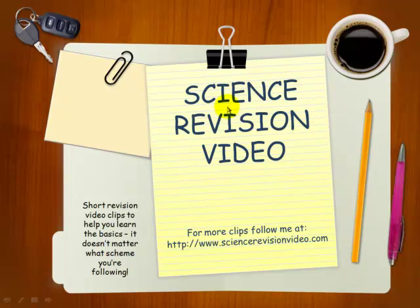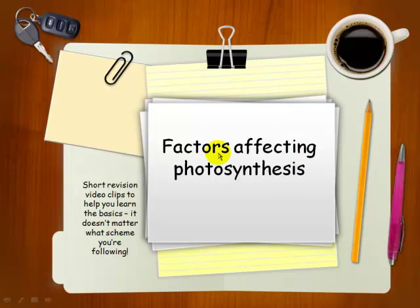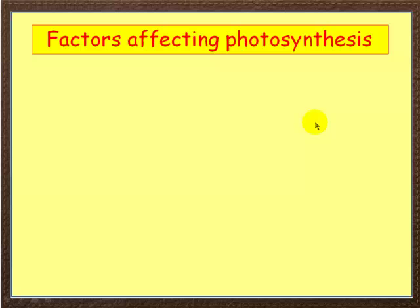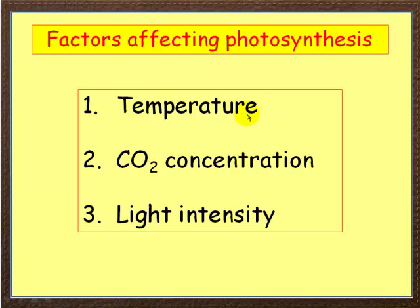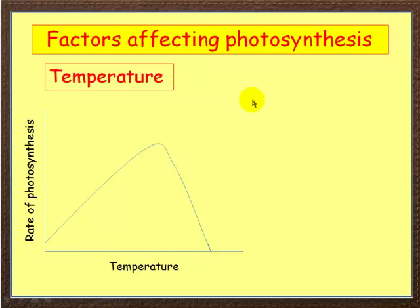Hello and welcome to this Science Vision video. In this video we're going to look at factors affecting photosynthesis. Hopefully by now you've looked at the photosynthesis video, and in this one we're going to see exactly what it is that can affect the rate of photosynthesis. Basically there are three factors: temperature, carbon dioxide concentration, and light intensity. Let's look at each one of those in turn, starting first of all with temperature.